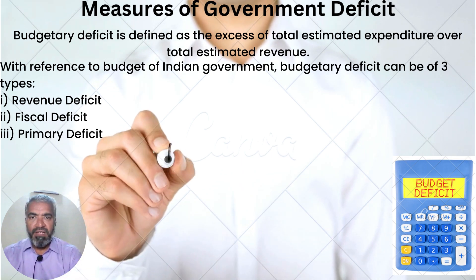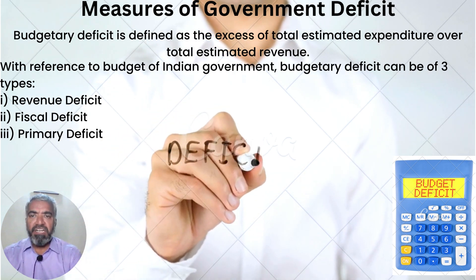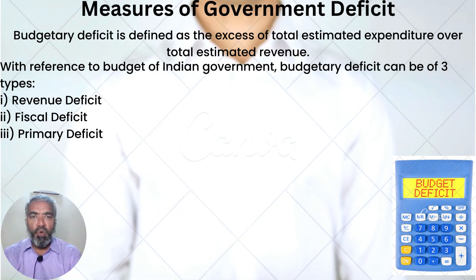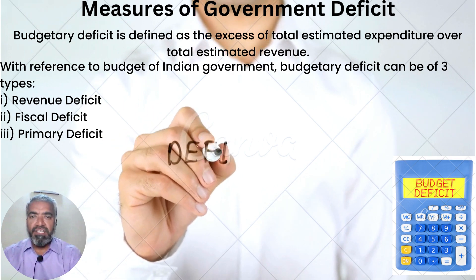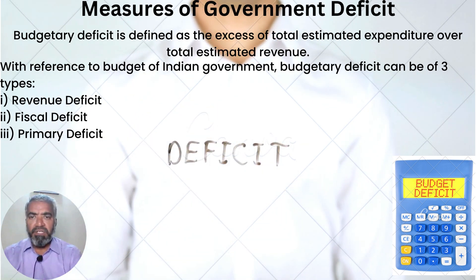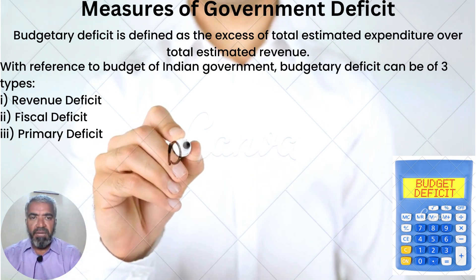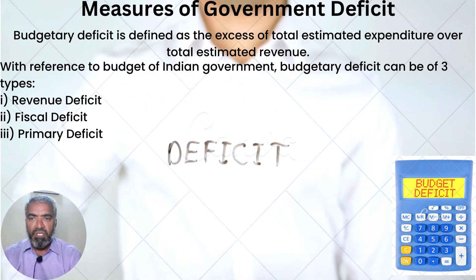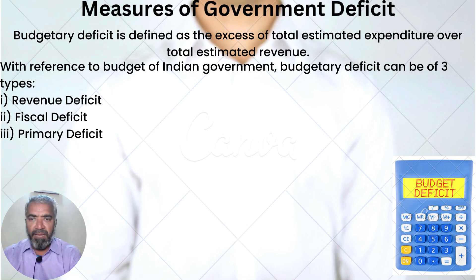Measures of government deficit: budgetary deficit is defined as the excess of total estimated expenditure over total estimated revenue. With respect to the budget of the Indian government, budgetary deficit can be of three types: one, revenue deficit; two, fiscal deficit; three, primary deficit.